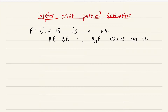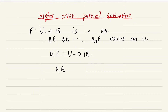Then I can consider each dif as a function from U to R. So I get new functions d1, d2, d3, ... dn, which are themselves functions from the open set U taking values in R. Now I can repeatedly take more partial derivatives. For instance, I could take d1d2f. This is exactly what the notation suggests: you first differentiate with respect to the second variable, getting d2f from U to R, then differentiate with respect to the first variable of this new function. Repeating this process, you can get many combinations of derivatives.